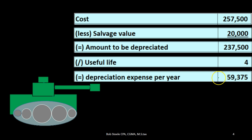In this case we have $59,375 that we will depreciate each year over the useful life of four years. That results, after four years, in accumulated depreciation of $237,500, leaving us with a book value — calculated as cost minus accumulated depreciation — at the end of four years equal to the salvage value of $20,000.